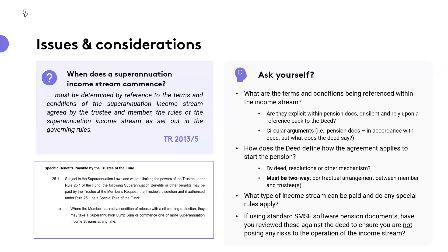We want to keep it fluid so that when changes occur, we can assess it on its own merits. Rule 25.1 is our rule that talks about specific payments to trustees — it can be paid as a superannuation income stream or a superannuation lump sum. If the deed is quite light or generic in terms of the powers the trustee has to pay benefits, then we're looking for more specific terms and referencing into the pension documents themselves.